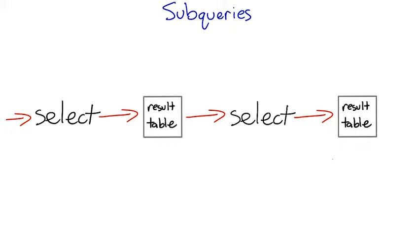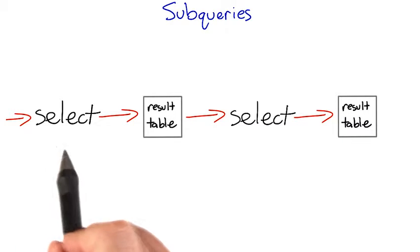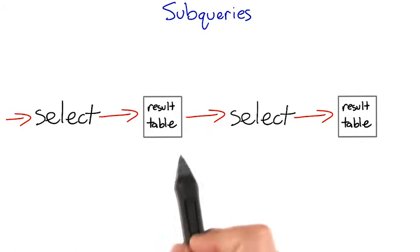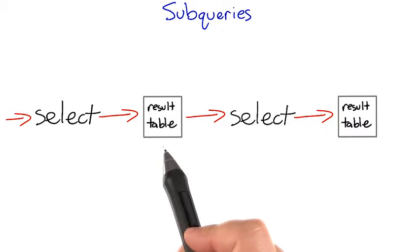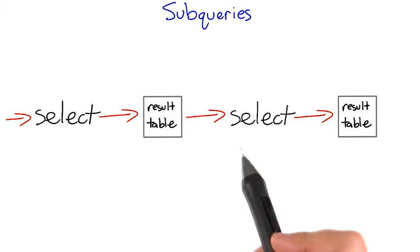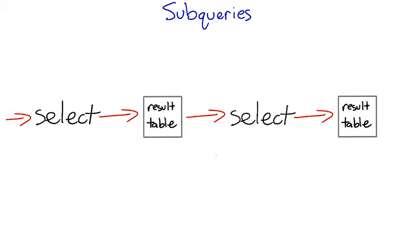Remember back in lesson one when I mentioned that the result of a query is always a table? This is why. Since the result of a query is a table, you can select from it, join it, aggregate it, and so on.